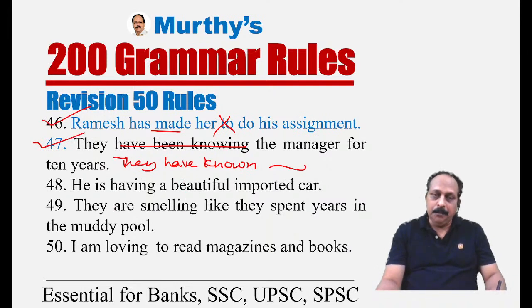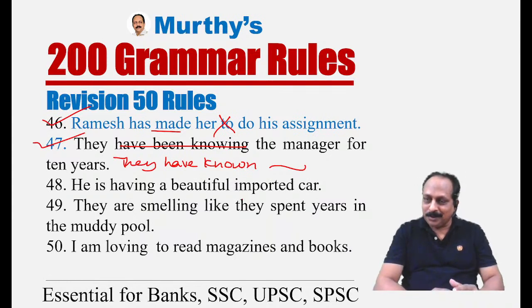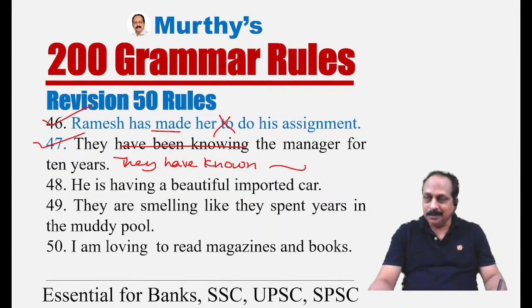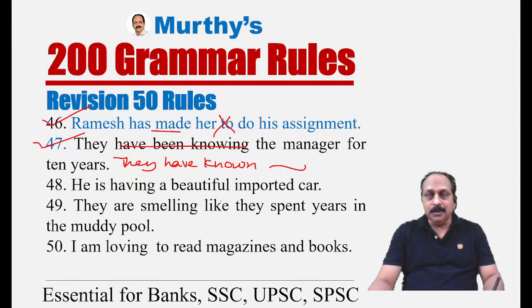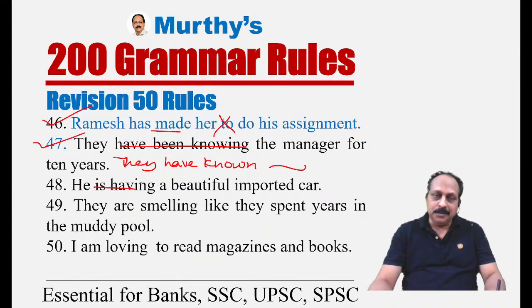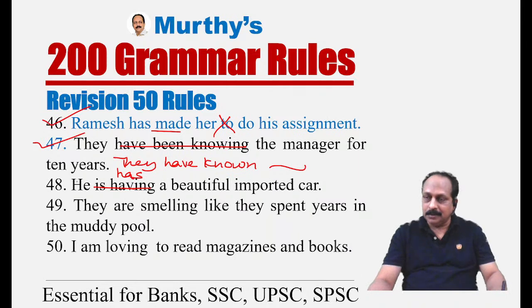Sentence forty-eight: 'He is having a beautiful imported car.' This sentence talks about possession. When 'have' is used for possession, we cannot use it in ING form — that would mean 'eating.' The correct sentence is: 'He has a beautiful imported car.' The primary auxiliary 'have' for possession cannot be used in the ING form.